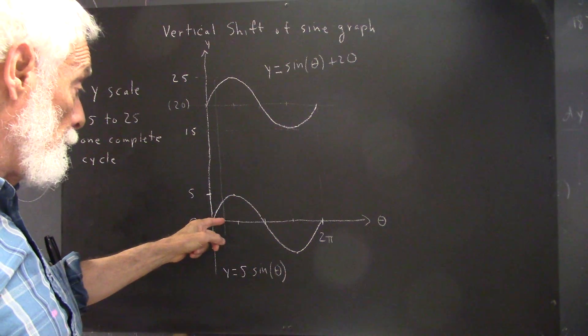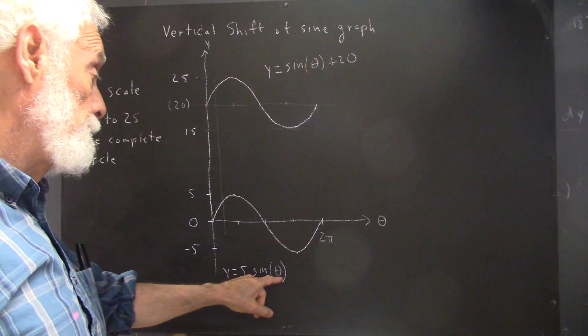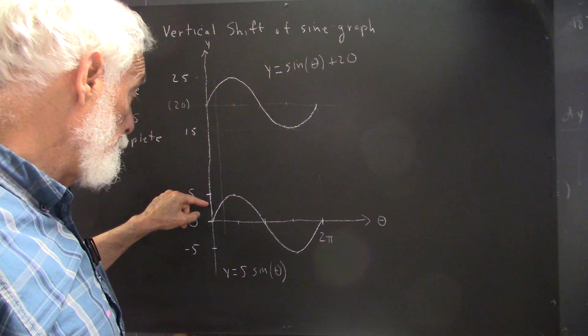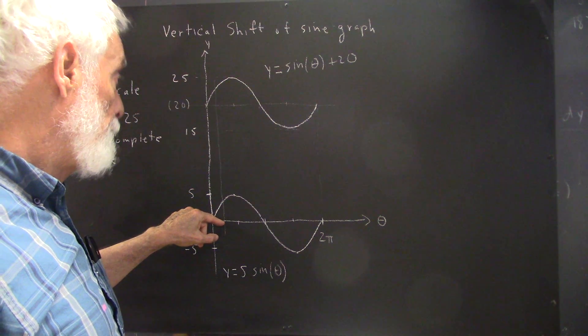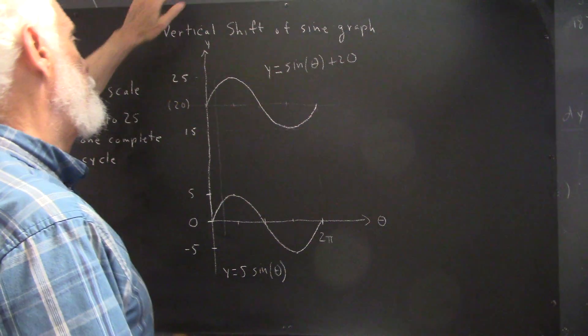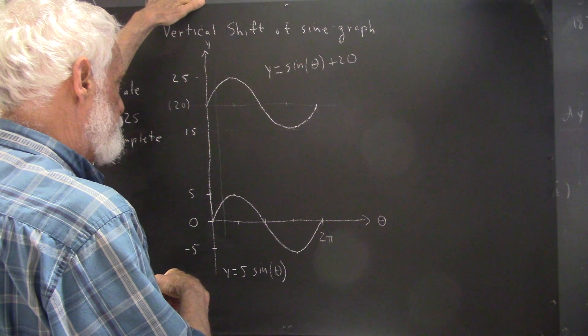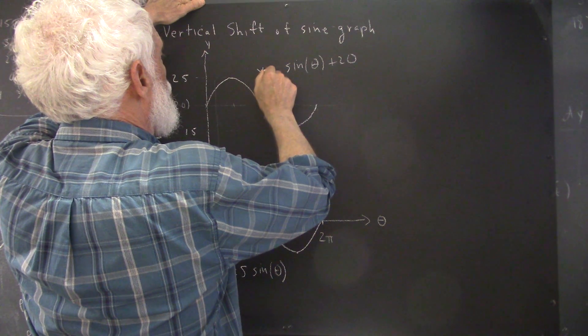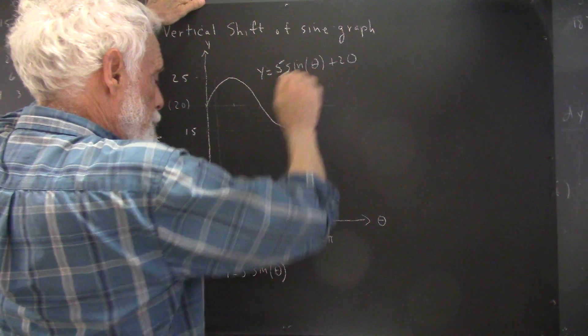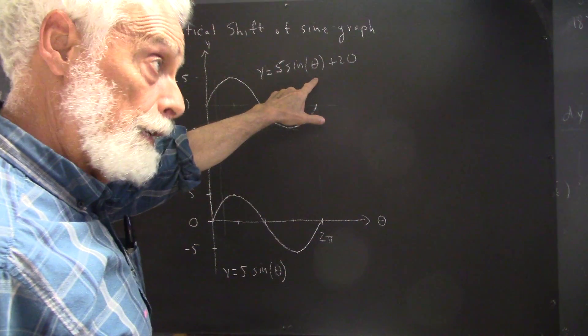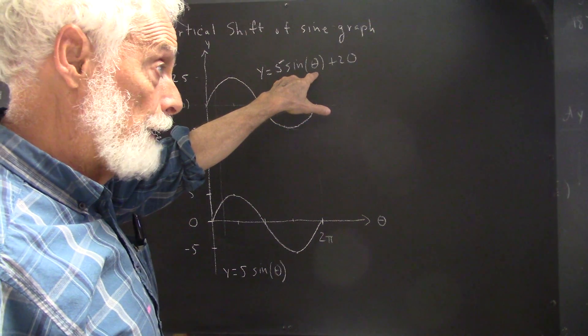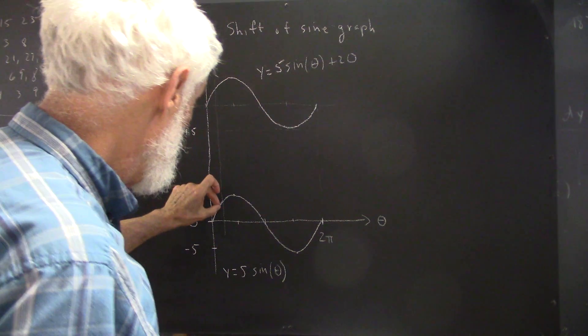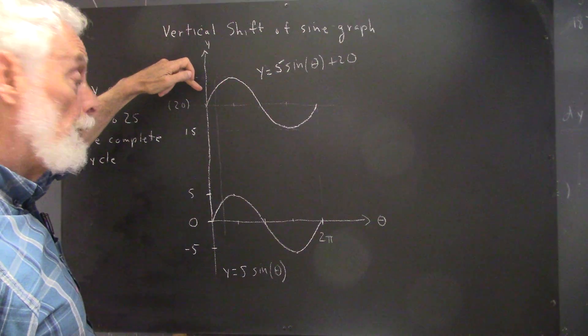So if we take a given value of theta, plug it in here, find the sine of that value, multiply that by 5, we get this y value. For that same value of theta, if we take that value of theta and... I got careless here. Hopefully you saw that before I did. It should be y equals 5 sine theta. Okay. So if we take our value of theta here, plug it in, we get the value of the sine multiplied by 5, we get the same thing that we got down here. Then we add 20 to it to raise this point up, 20 units, and now we have the y coordinate on this graph.